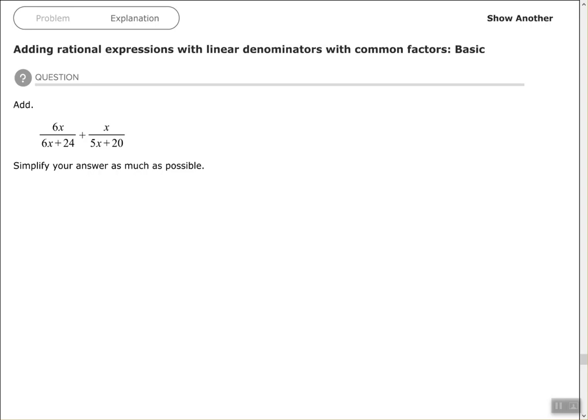Before we find the common denominator, we need to factor those denominators. The first denominator has a GCF of 6. The second denominator has a GCF of 5, so I can factor out a 5.